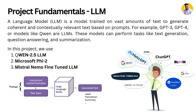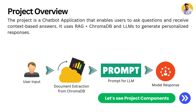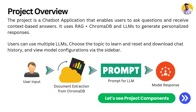The first model is Qwen, the second is Microsoft Phi-2, and the third is Mistral Nemo — a fine-tuned large language model. This project is a chatbot application that enables users to ask questions and receive context-based answers. It uses RAG plus ChromaDB along with large language models to generate personalized responses. Users can choose from multiple LLMs, select topics to learn, reset and download chat history, and change model configurations from the sidebar.